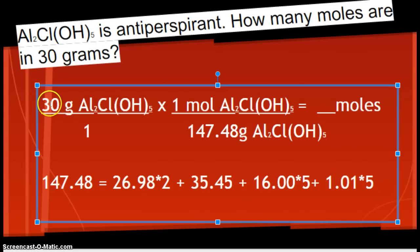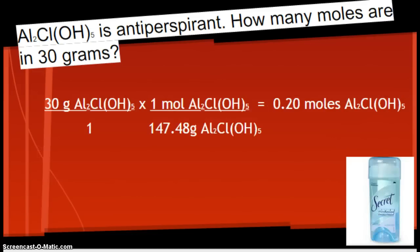Alright. In your calculator, you're putting 30 times 1 divided by 147.48. Again, you multiply everything across the top, divide by everything that's on the bottom. Make sure you're putting in your calculator so you know how to do it. And, you get 0.20 moles of Al₂Cl(OH)₅ or antiperspirant. And, just so you know, like the little thing of Secret that I put on here, in real life, those are usually about 75 to 80 grams. So, this would be about half the container if it was that much of that chemical.